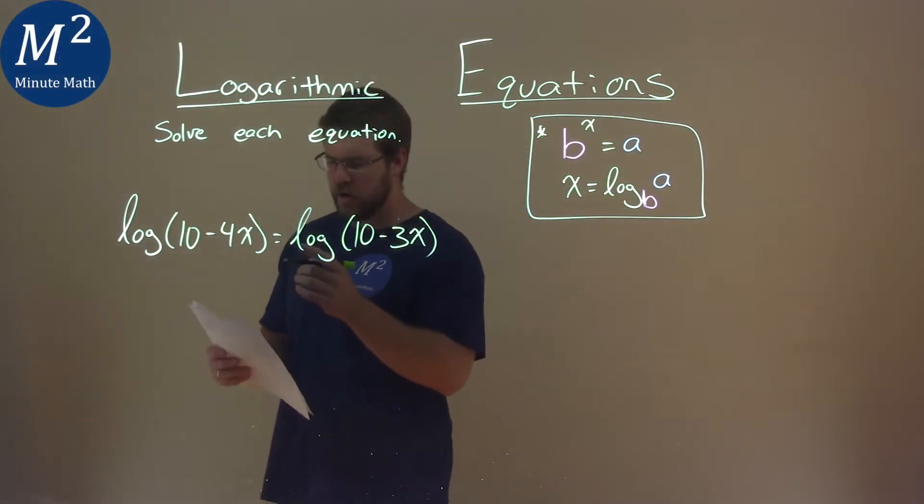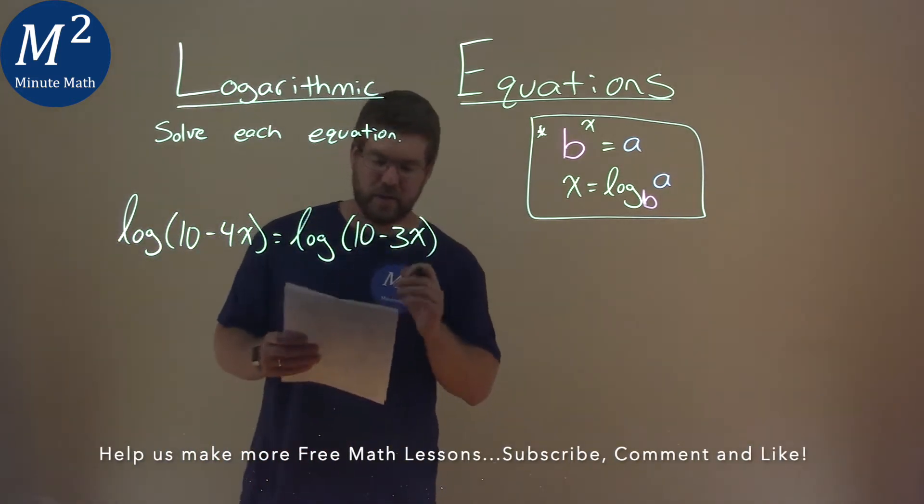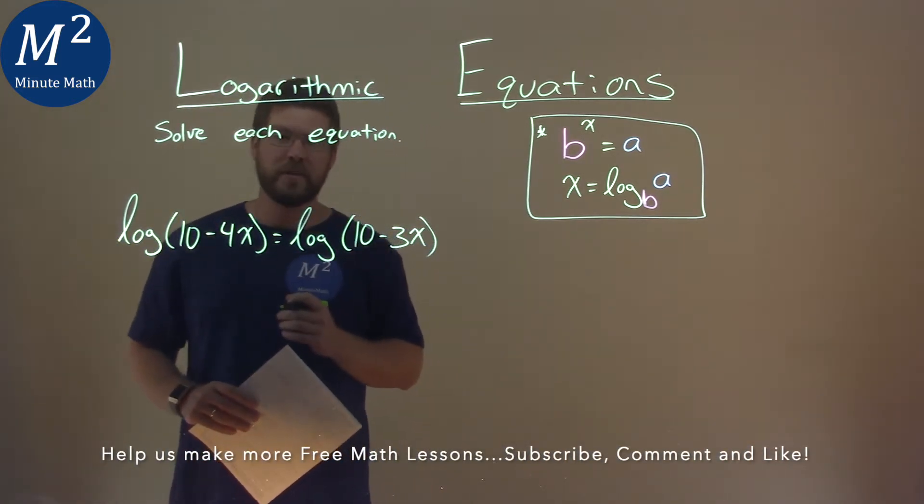We're given this problem right here. Log of 10 minus 4x equals log of 10 minus 3x, and we need to solve this equation.